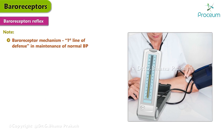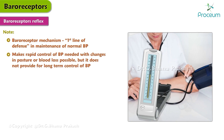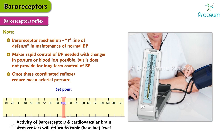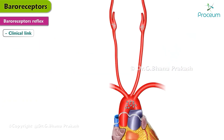Note that the baroreceptor mechanism is the first line of defense in the maintenance of normal blood pressure. It makes the rapid control of blood pressure needed with changes in posture or blood loss possible, but it does not provide for the long-term control of blood pressure. Once these coordinated reflexes reduce the mean arterial pressure back to the set point of 100 millimeters of mercury, the activity of the baroreceptors and cardiovascular brainstem centers will return to the tonic or baseline level.